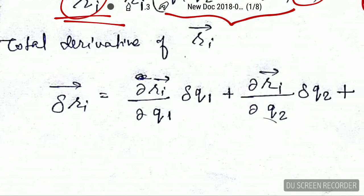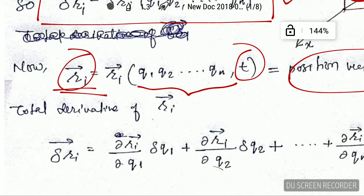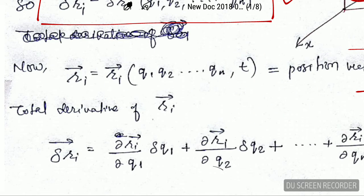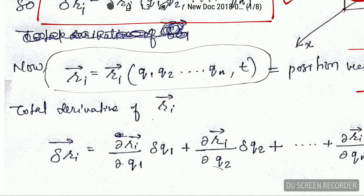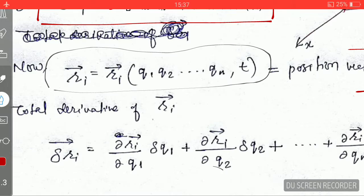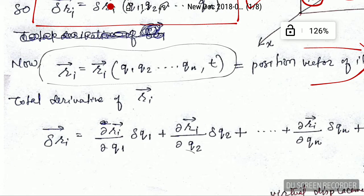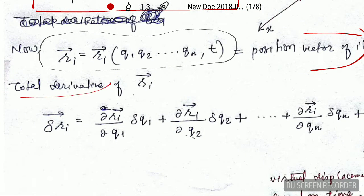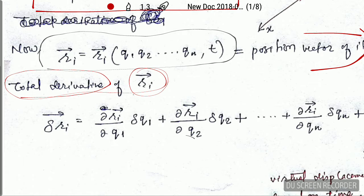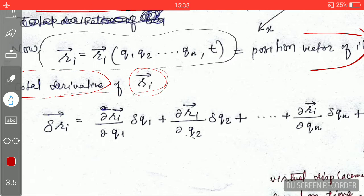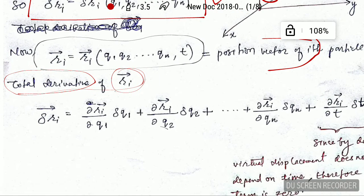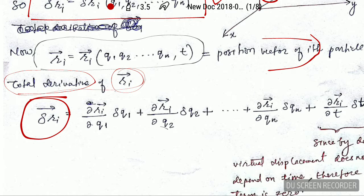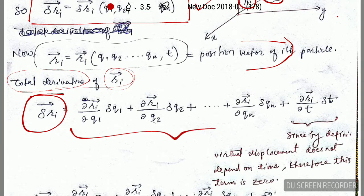Let's go back to our previous equation — the position vector of the ith particle. In order to find the virtual displacement, we will take the total derivative of r_i. The total derivative of r_i is written here as this full expression. If you don't know about the total derivative, please refer to my previous lectures where I have already explained it.